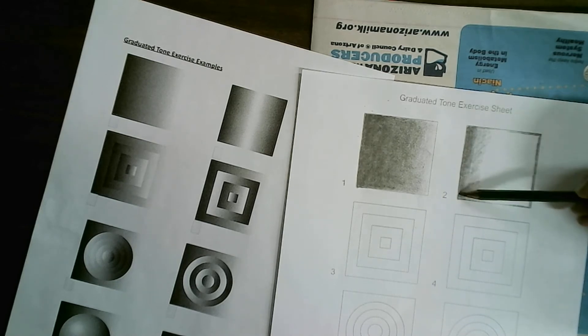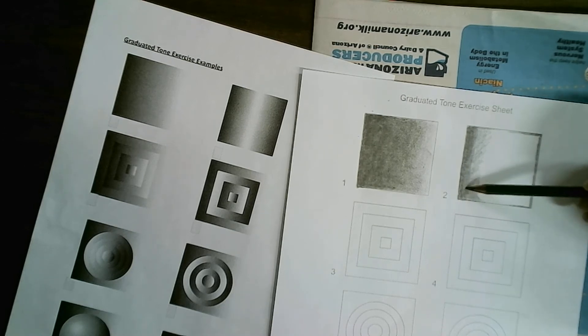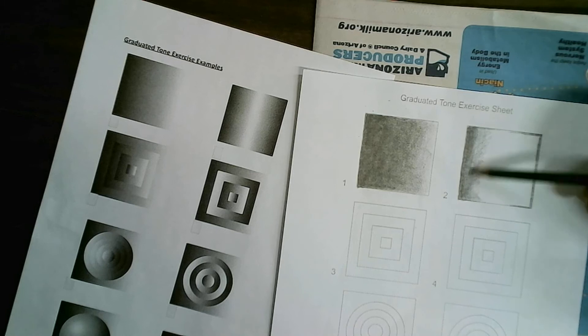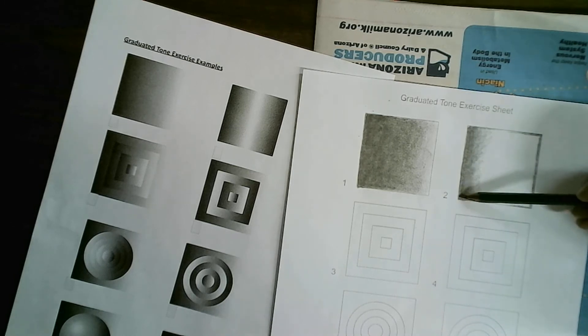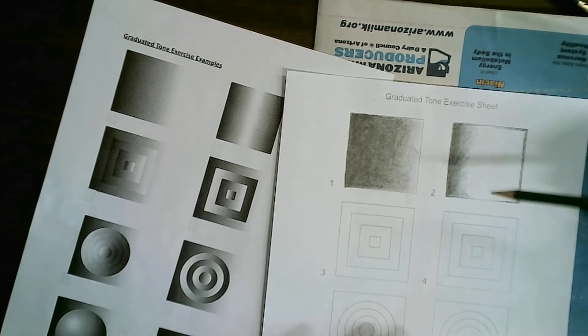With graphite, you have to kind of work it into the paper, like push it into the paper a little bit by building up your layers. I'm going to switch to my 2B pencil.